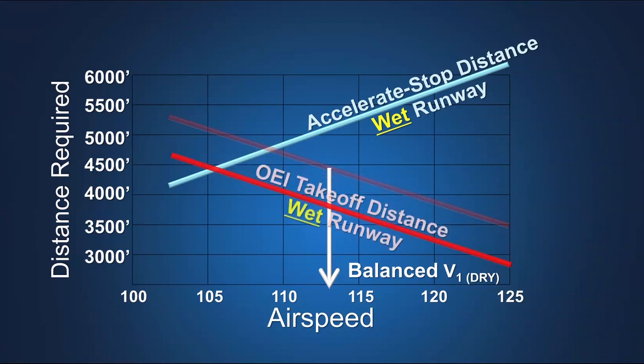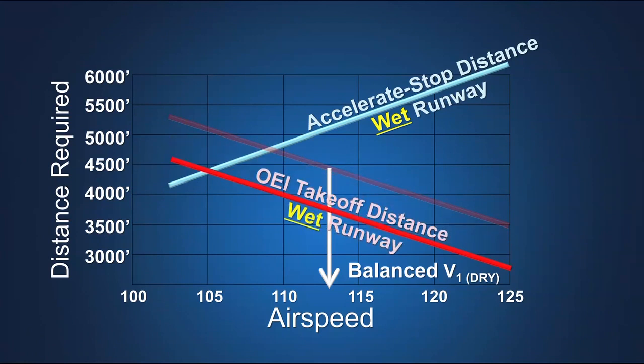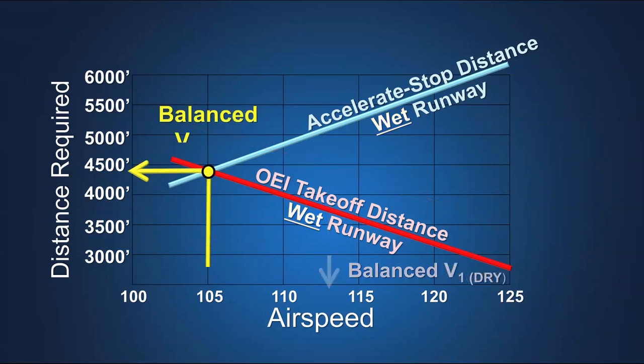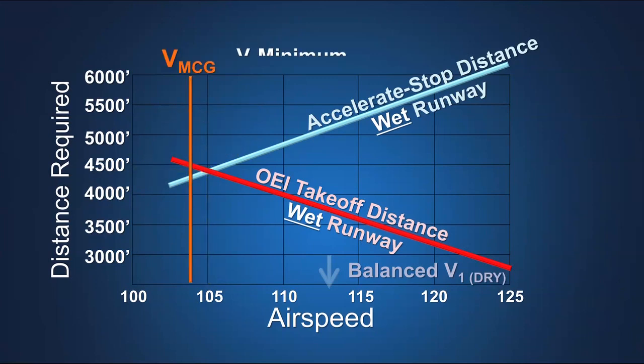Reducing this screen height also reduces the one-engine-inoperative takeoff distance on a wet runway. The allowance for reverse thrust credit and the use of a 15-foot screen height help the engineers rebalance the takeoff field length required for takeoff on a wet runway through the use of a lower wet runway V1 speed. The ability to reduce V1 speed can be limited by VMCG speed and the lowest permissible V1 speed in relation to this ground minimum control speed.